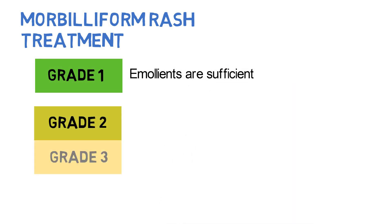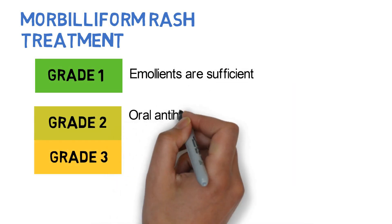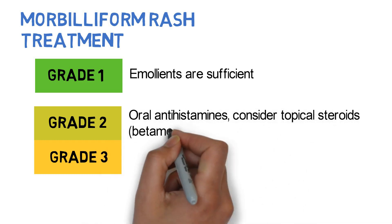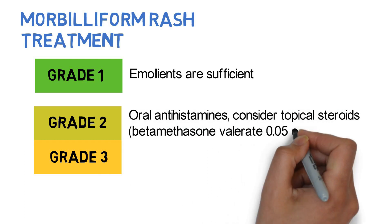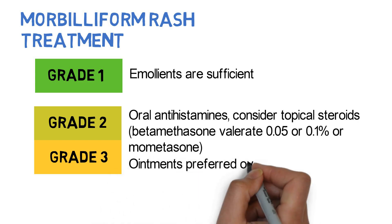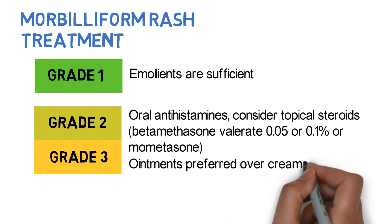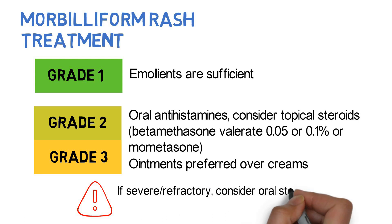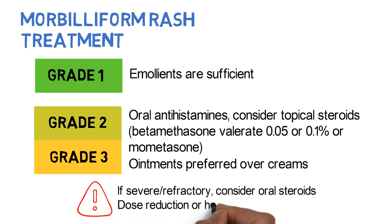For grades 2 and 3, the patient can use oral antihistamines. Mid to high potency topical steroids like betamethasone valerate 0.05 or 0.1% or mometasone can also be considered. Ointments are preferred over cream since they are generally more effective. For more severe or refractory eruptions, consider oral steroids. At times, dose reductions or temporary holds of the medication might be indicated.